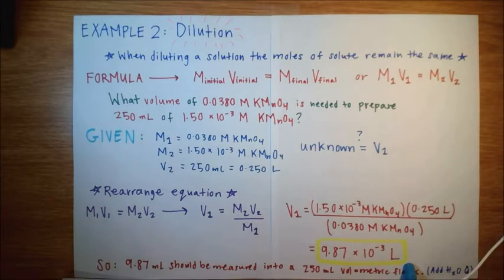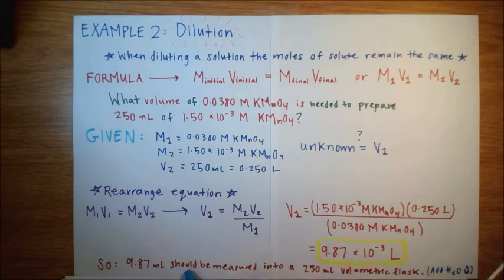So for a dilution problem, if you're in the lab and you need to dilute a stock solution to a different concentration, in this case, 9.87 milliliters of the solution should be measured into a 250 milliliter volumetric flask. And then you would add water up until the 250 ml mark to get your diluted solution.